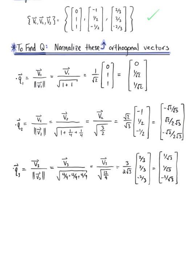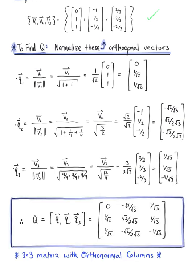Therefore, matrix Q is the 3-by-3 matrix with column vectors Q sub 1, Q sub 2, and Q sub 3. These are orthogonal unit vectors. Now that we have matrix Q, we are ready to find matrix R.